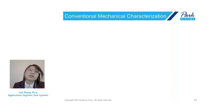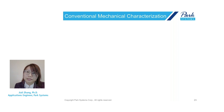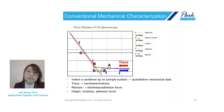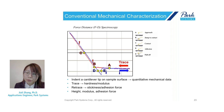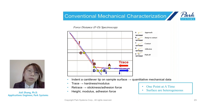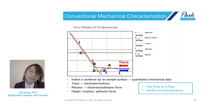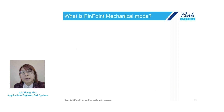Why do we care about Pinpoint mode? Conventionally, researchers rely on a single force-distance curve to acquire mechanical properties by indenting a hard cantilever onto the sample surface — done one point at a time, which is very local. Since most samples are heterogeneous, to get a full picture of the mechanical properties it is necessary to get both a distribution image and quantitative data simultaneously. Park Systems' Pinpoint mode provides the most effective method to acquire nanomechanical mapping with high speed and accuracy.